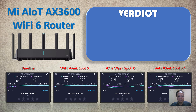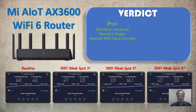Here's the summary: At baseline (about 2 meters from the router), we get a download speed of about 645 Mbps and upload of 441 Mbps. At weak spot X1, download is 477 Mbps and upload 120 Mbps — very decent for our work needs. At the furthest extreme corner in the service balcony (X2), we get about 219 Mbps download and 66 Mbps upload — adequate for texting and voice calls. In the master bedroom, 417 Mbps download and 232 Mbps upload.